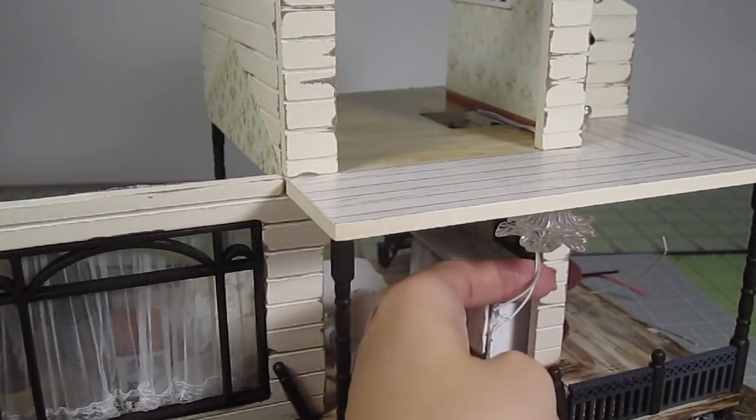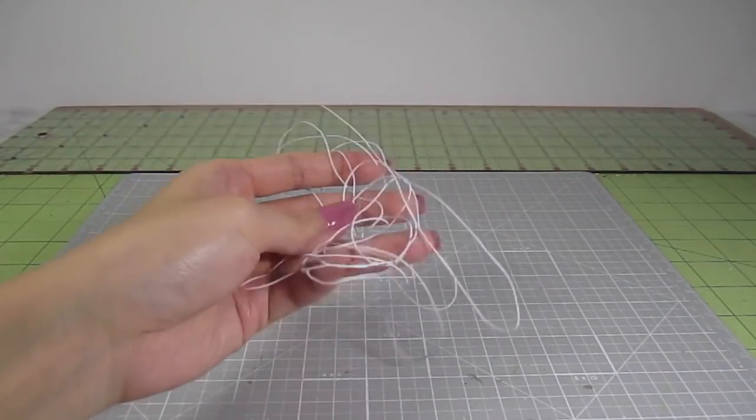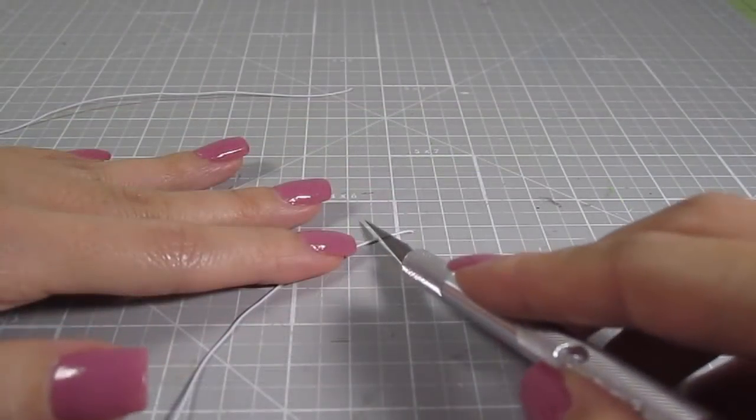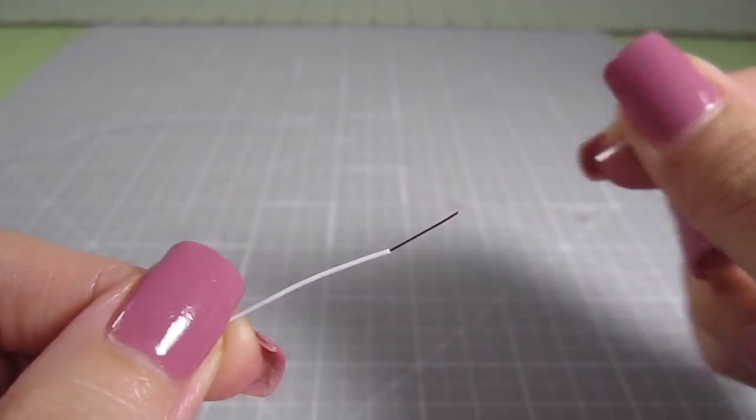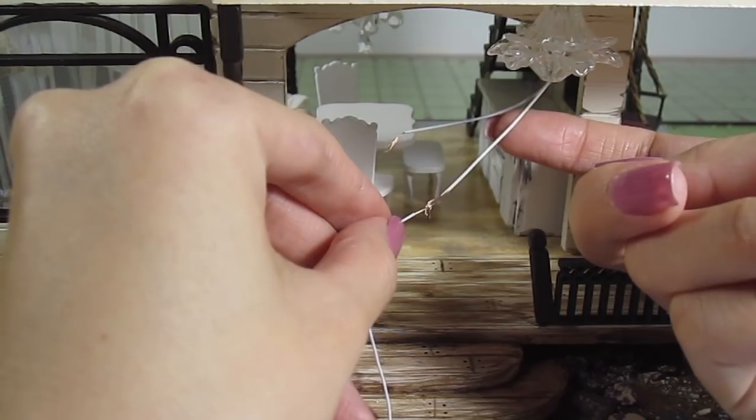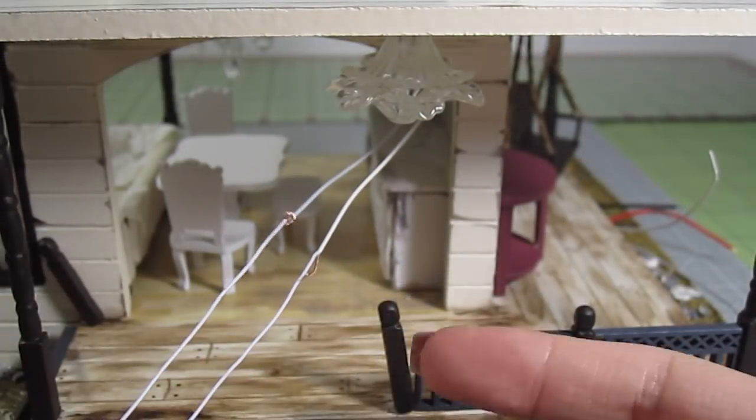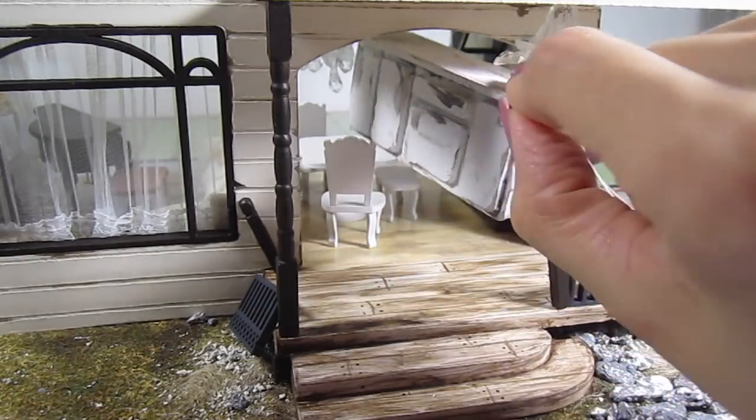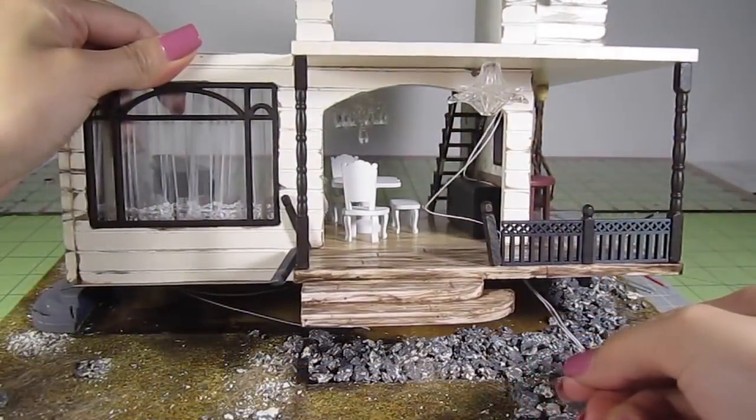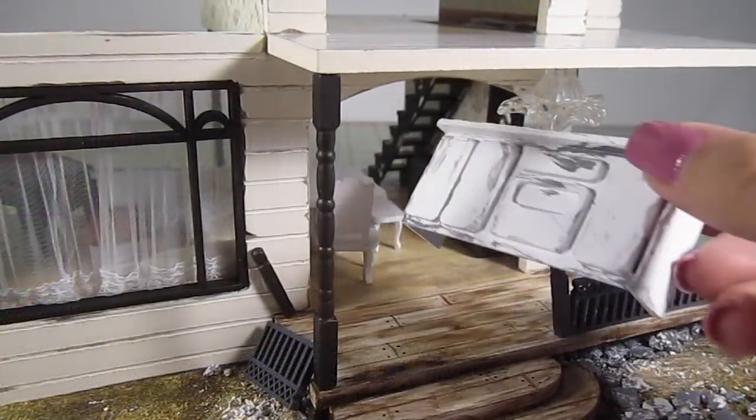These two wires are too short to reach the battery pack so we need some extension wire. Cut out two six inch lengths. Score the plastic ends to expose the wire. Do this for both ends. Now just attach them to the bulb wires to extend them. I've removed the kitchen counter to have more space to work with. Pull the wires through the hole in the corner. Now you can add the kitchen back.